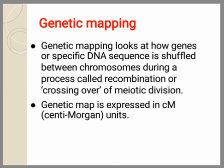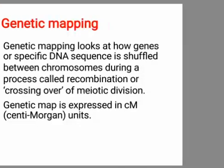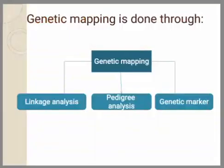Genetic mapping is expressed in the centimorgan unit. Genetic mapping is done through three types of tools: linkage analysis, pedigree analysis, and genetic markers.